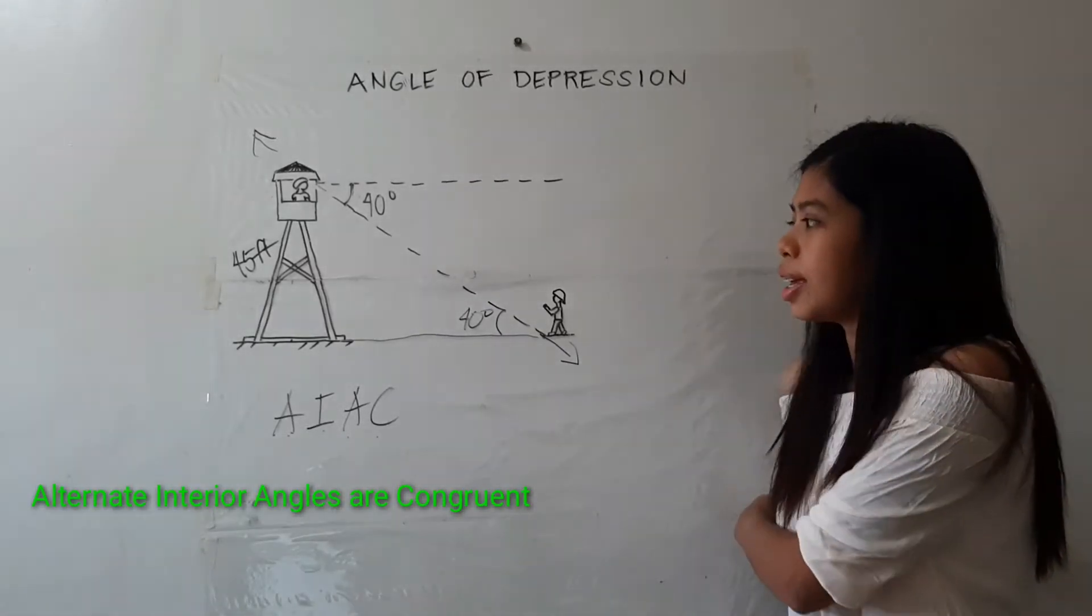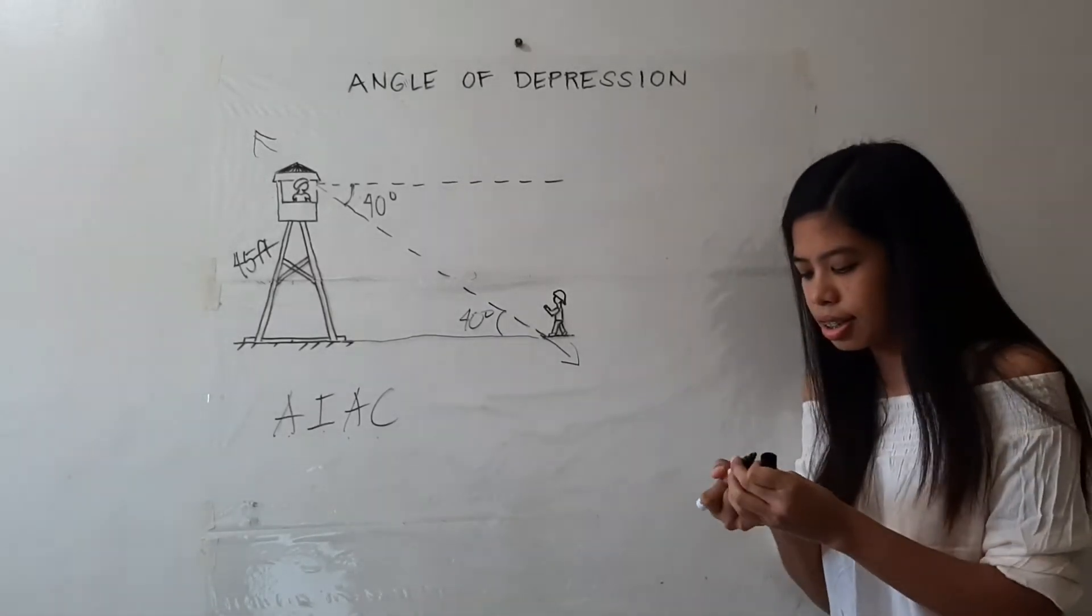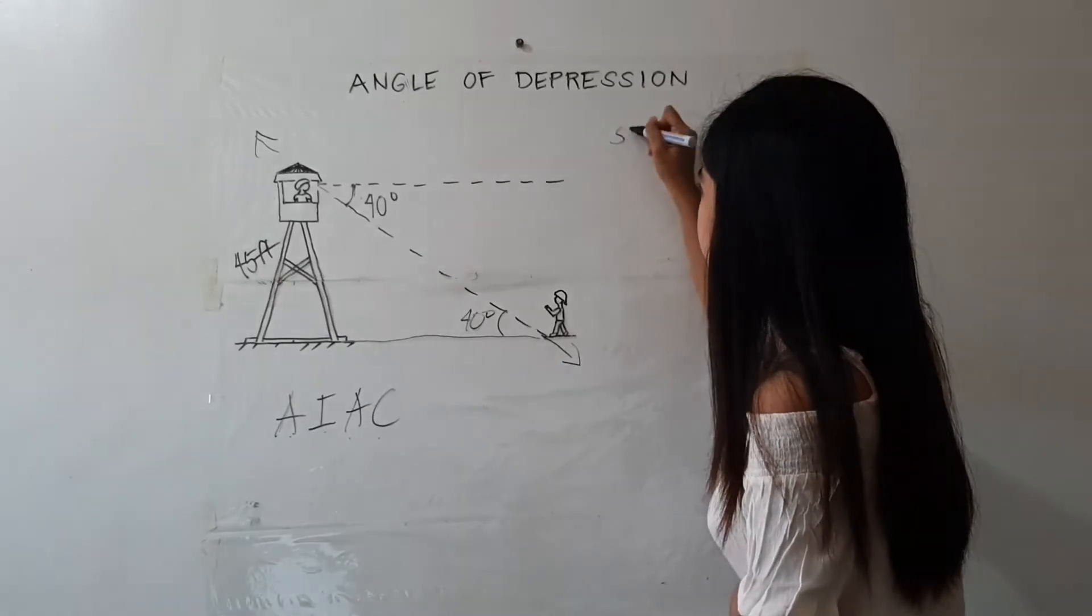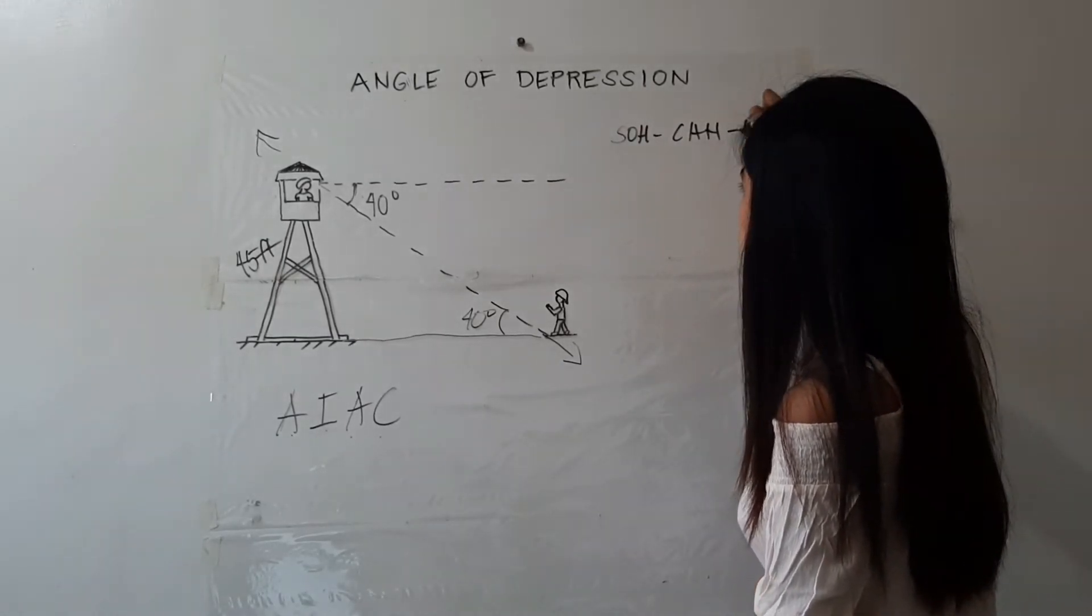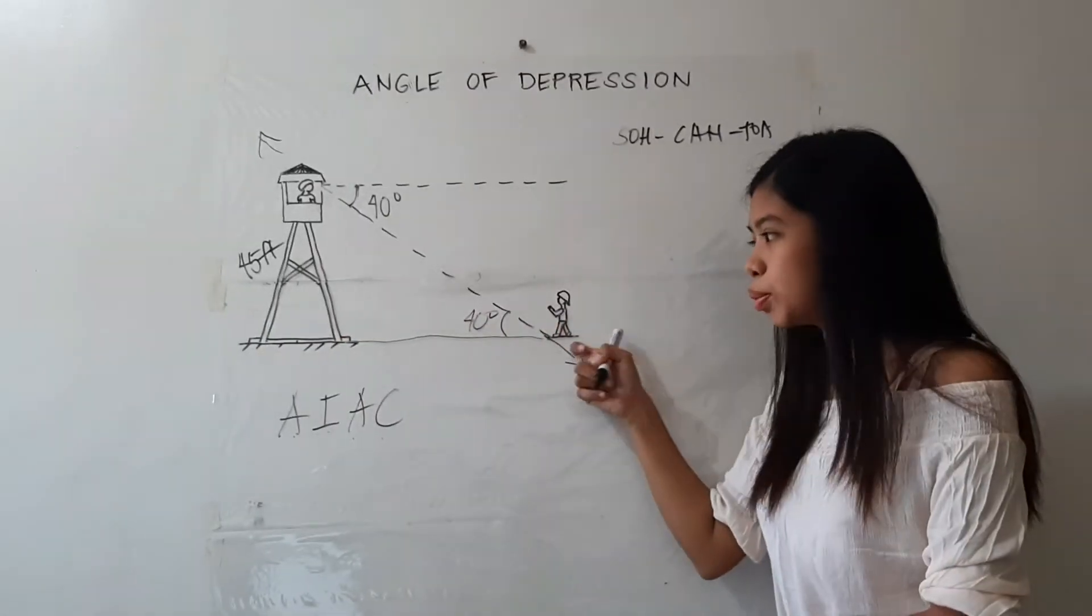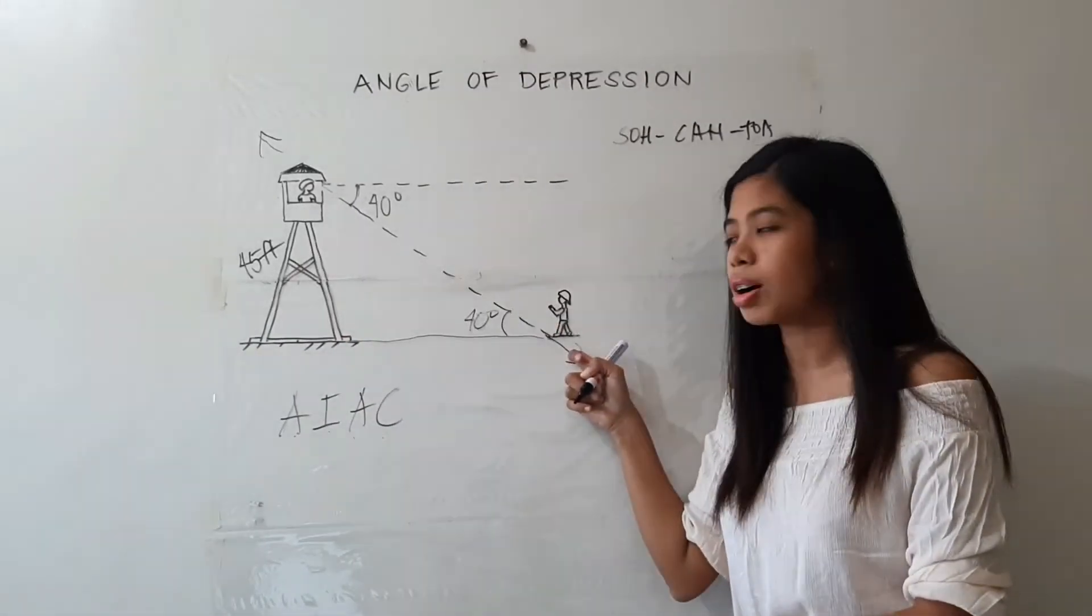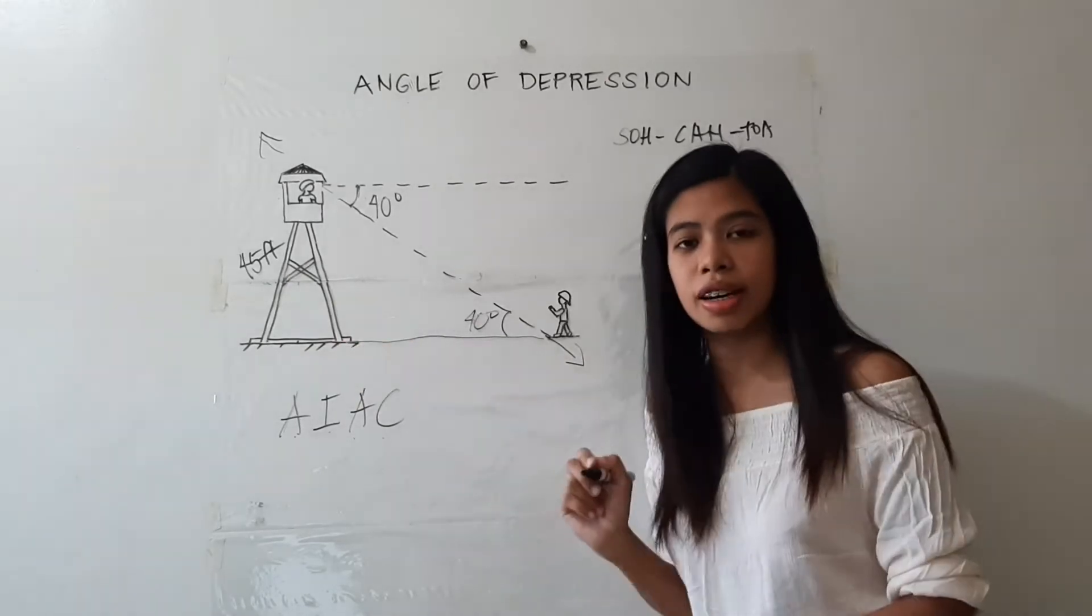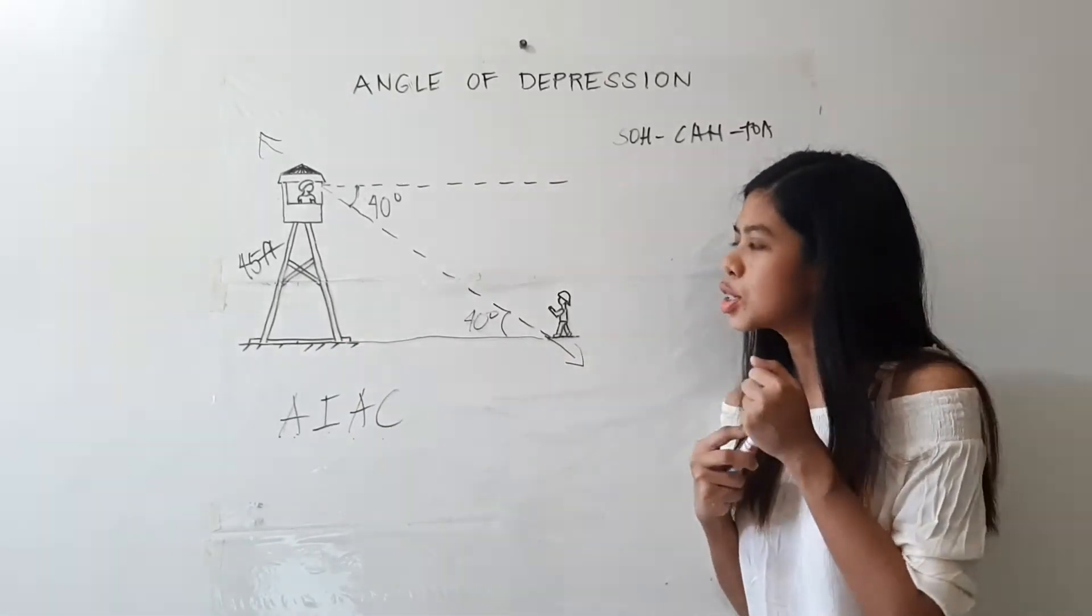Now, applying again the trigonometric ratio SOHCAHTOA, we may look for the distance between the forest ranger's partner to the base of the tower. So, since the angle of 40 degrees is already located inside the triangle, we may now find out the label or the parts of the right triangle.